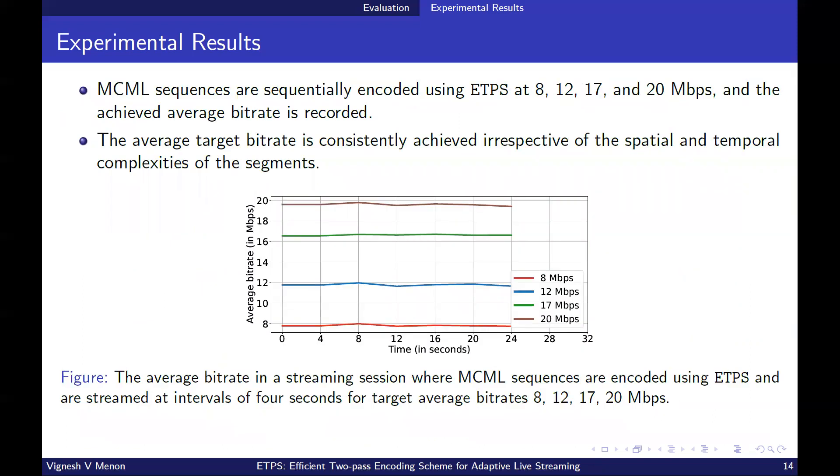Finally, the feasibility of using ETPS in a live streaming session is evaluated. MCL-JCV sequences are sequentially encoded using ETPS at 8, 12, 17 and 20 Mbps and achieved bitrates are recorded as shown in the figure. It is observed that the average target bitrate is consistently achieved irrespective of the spatial and temporal complexities of the segments. Since the achieved bitrate remains almost fixed and never exceeds the target bitrate, it is ideal for time-sensitive data transport applications like live streaming.